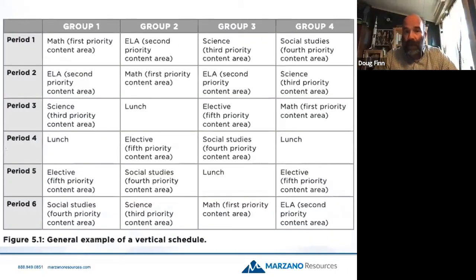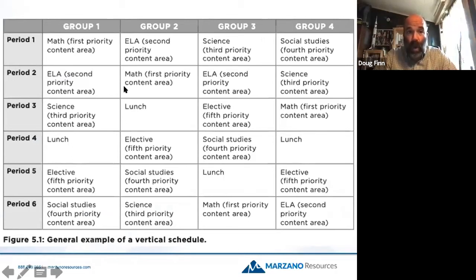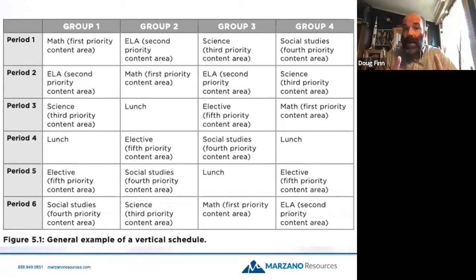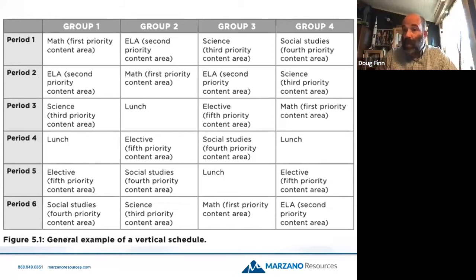Here's a more realistic vertical schedule example. It kind of looks like a normal schedule, but the math group is the first priority content — so every time you see a math block in group one, second period for group two, sixth period for group three, and third period for group four, those kids were placed first. Then the second content area, ELA, was added. If there was a conflicting issue with math and ELA at the same time, they did not change the math class — they altered the ELA class. Math was the core area least disrupted by the scheduling process. Which content area you pick is up to you based on your data.